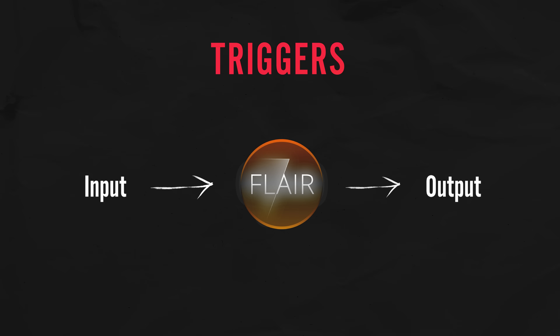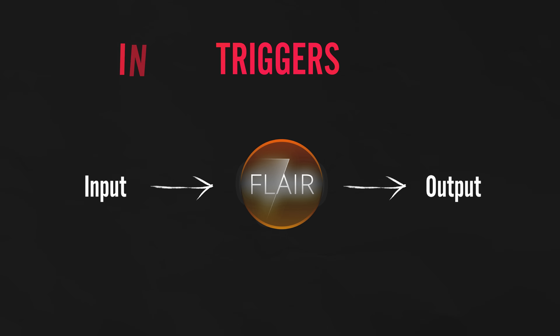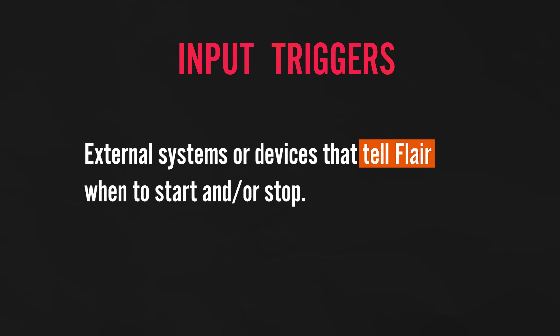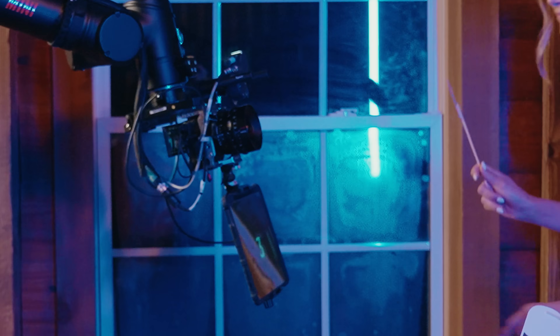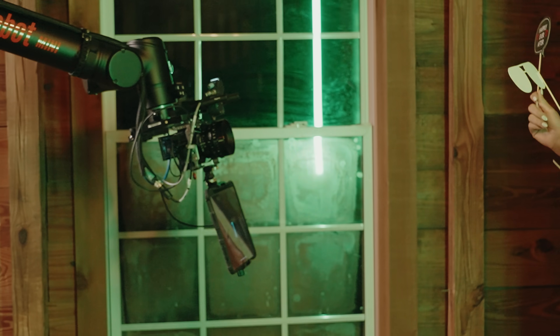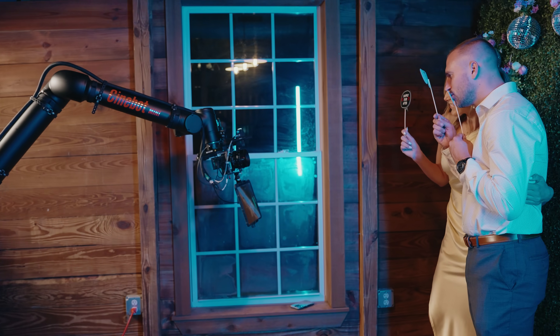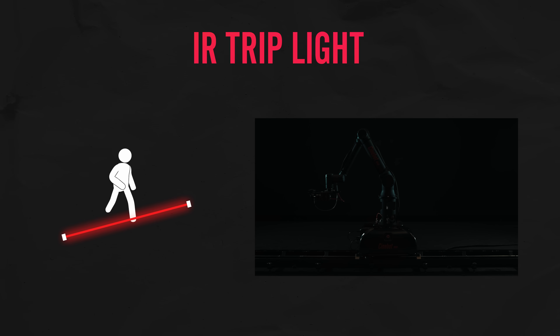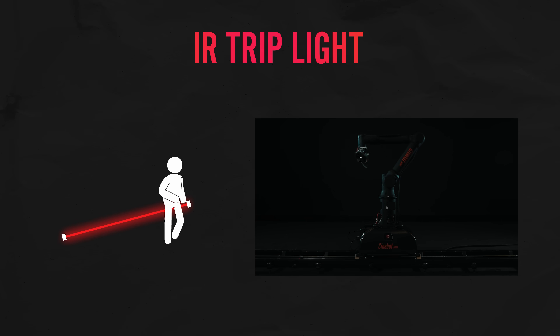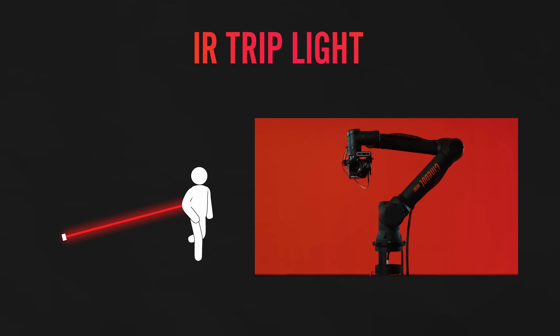We can break triggers down into two main categories: input and output. Input triggers allow us to use external systems or commands to trigger Flare. I actually used one at my own wedding for a glambot setup. The app that I made was able to trigger Flare to start using OSC, which is a common networking protocol. There are a few other ways to trigger Flare, such as using an IR trip light so that once the beam is broken, the robot shoots — kind of like the garage door sensors that you have to jump over when you're closing the garage.